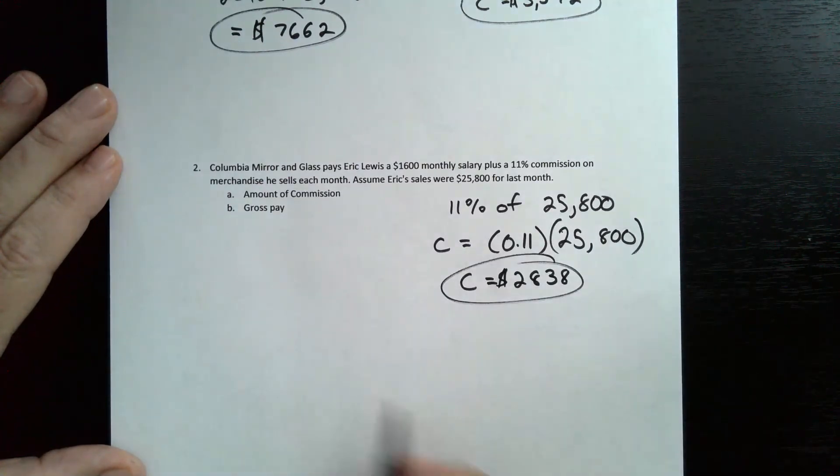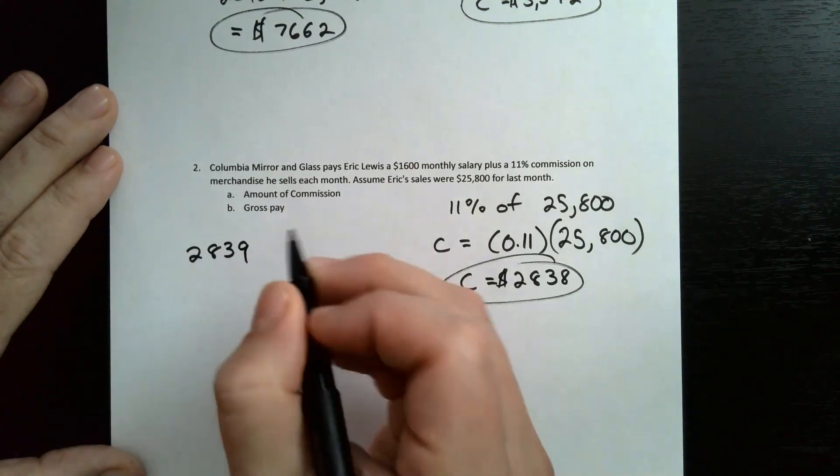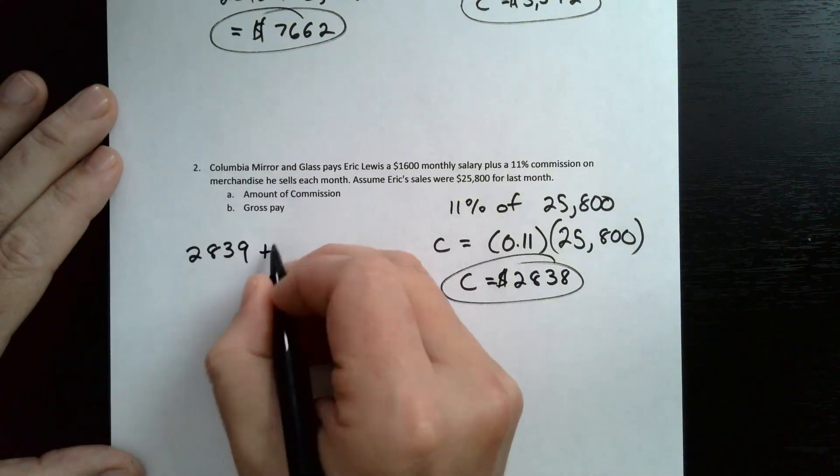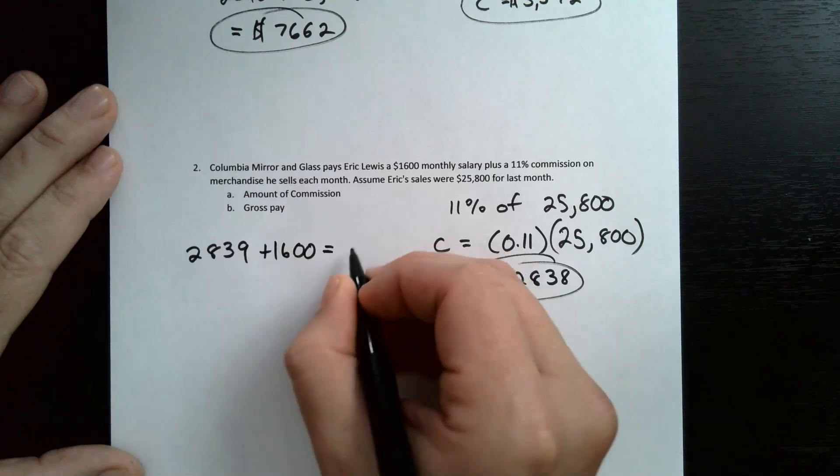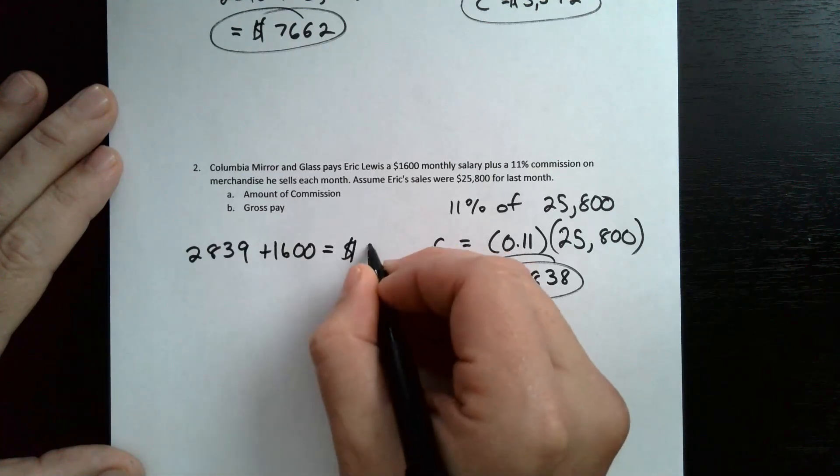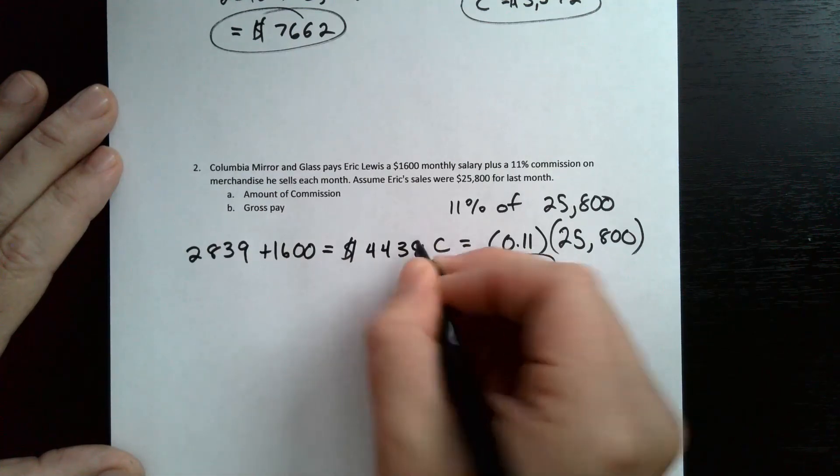Now the gross pay, you add those two together, so you get $2,838, which is your commission, or his commission, plus $1,600. And if you add those together, you get $4,438.